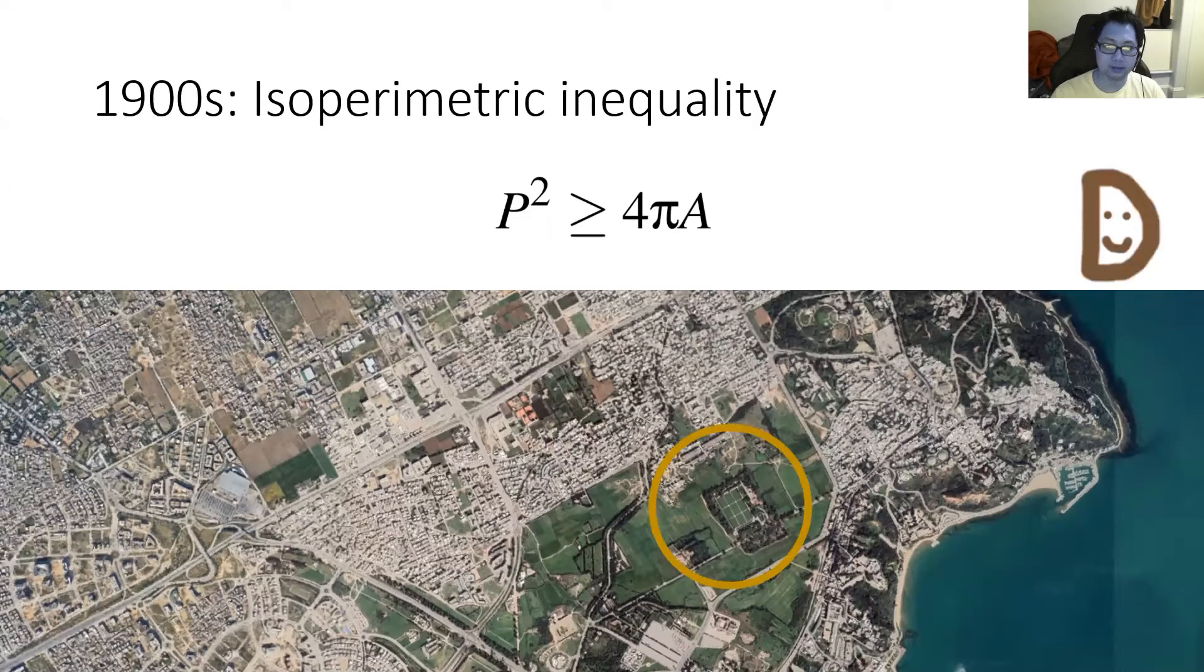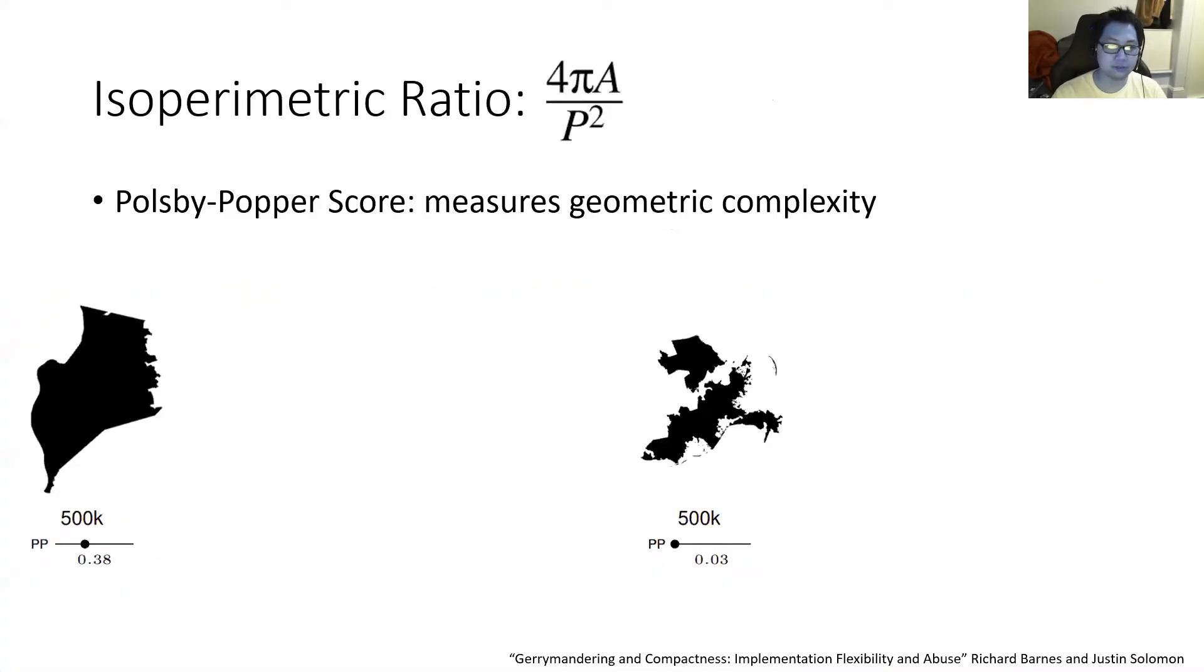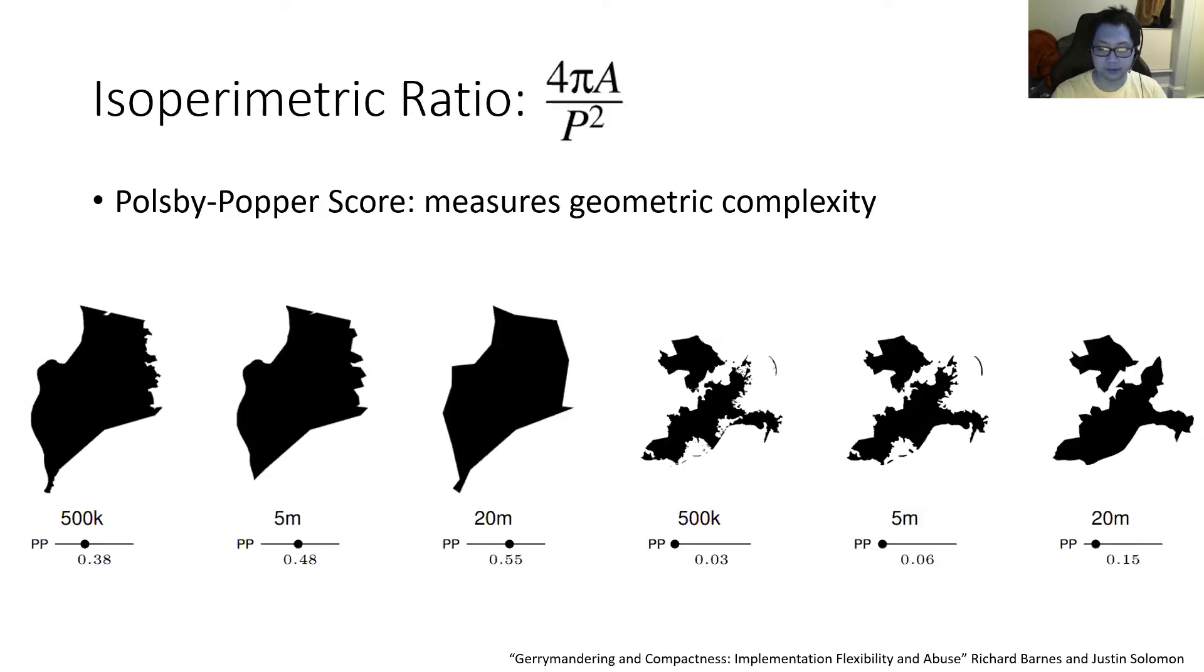With a slight modification of the isoperimetric inequality, you get the isoperimetric ratio, which measures how far a shape is from being a perfect circle. In political science, this ratio is widely used and known as the Polsby-Popper score. There, it is used as a measurement of geometric complexity, with low scores being more complex and high scores being less complex. Geometric complexity in this setting is sometimes stigmatized as an indication of political malice. Recent work, however, shows that this score only actually indicates the resolution you downloaded your map at. Here we see that if you download maps of coarser resolution, your isoperimetric ratio increases dramatically.